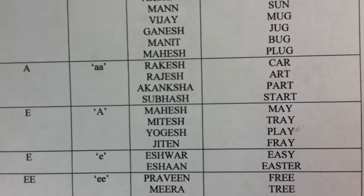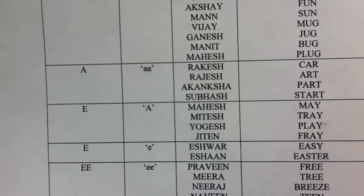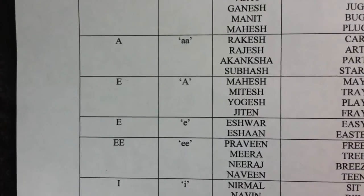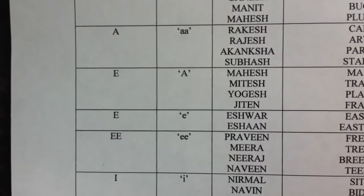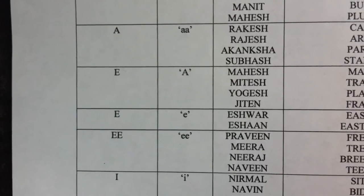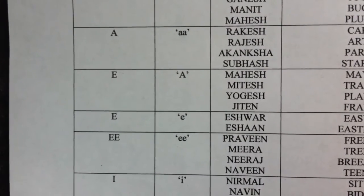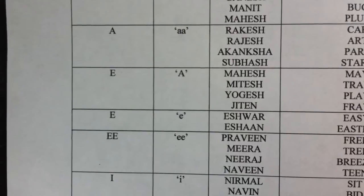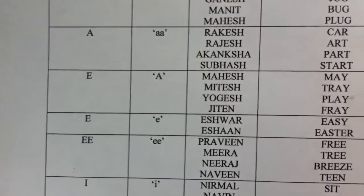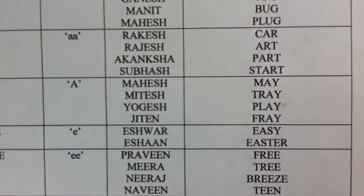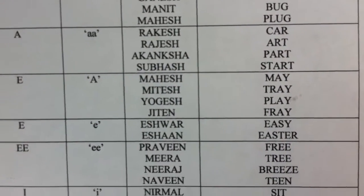Words for reference would be May, Trey, Play, Frey, etc. If E happens to be the first letter of the name, then it would take the conventional 'ee' pronunciation. An example would be Ishwar or Ishan. And words for reference from the English dictionary would be Easy, Easter, etc.